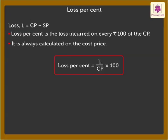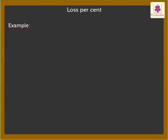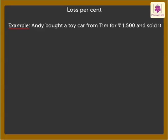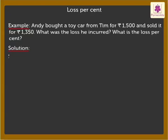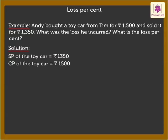Let's understand it in a better way by solving an example with Andy. Andy bought a toy car from Tim for 1,500 rupees and sold it for 1,350 rupees. What was the loss he incurred? What is the loss percent? Selling price of the toy car is equal to 1,350 rupees. Cost price of the toy car is equal to 1,500 rupees. To find the answer, we follow these steps. Step 1: Find the loss. Loss is equal to cost price minus selling price, which is 150 rupees.